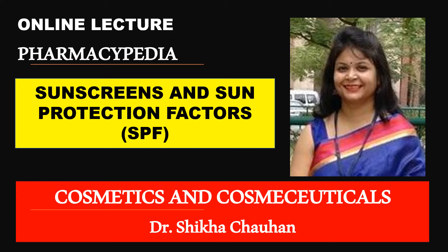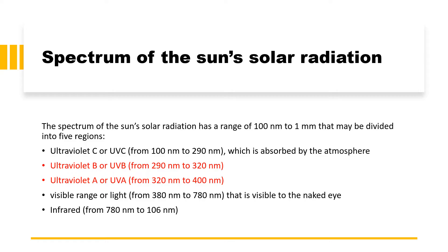Let us first try to understand the spectrum of solar radiation. Although solar radiation has been divided into five major regions: ultraviolet C, ultraviolet B, ultraviolet A, visible range, and infrared range. Since we are here to discuss about sunscreen,